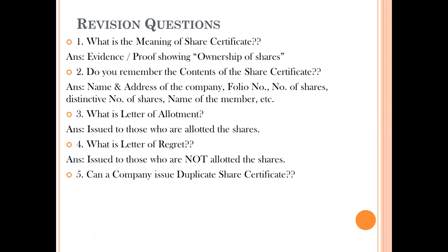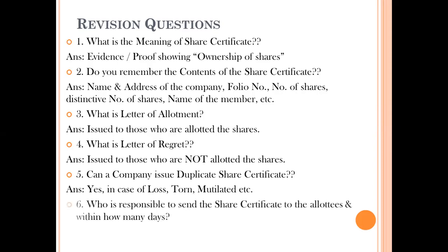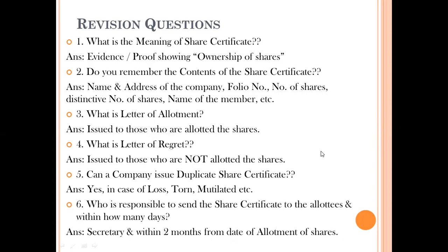Can a company issue a duplicate share certificate? Yes, a company can issue a duplicate certificate only if the original is lost and you have proved it — whether it is stolen, mutilated, damaged, or destroyed. In all these cases the company can issue a duplicate share certificate, but the company has to bear heavy penalties for that, so keep your certificates very carefully. The secretary of the company is responsible for drafting and sending the letters to members, and within two months from the date of allotment the share certificate must be sent.